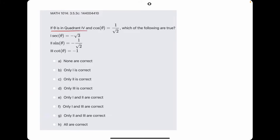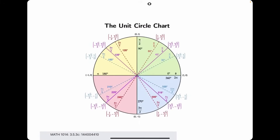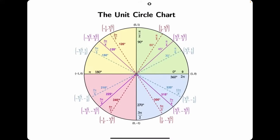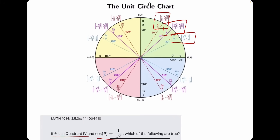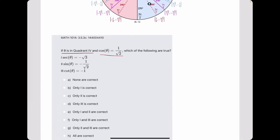In this problem, they say if theta is in quadrant 4 and cosine is equal to 1 over root 2, which of the following are true. As a reminder, it's very useful to understand the unit circle, or at least the ordered pairs that go along with pi over 6, pi over 4, and pi over 3. I highly recommend memorizing these.